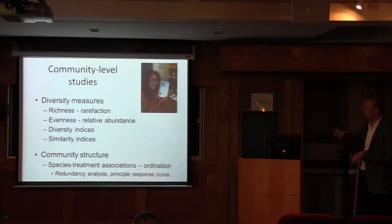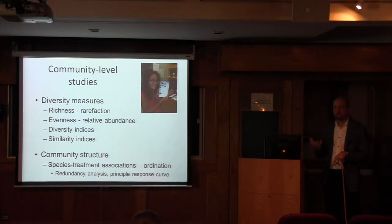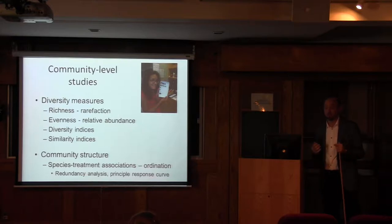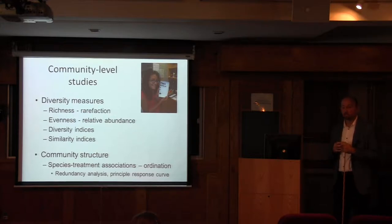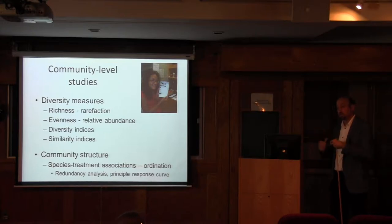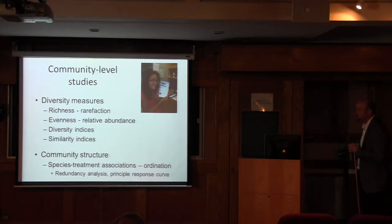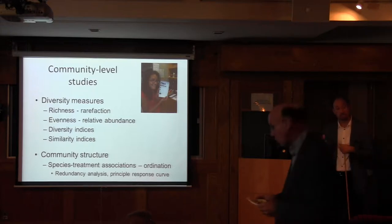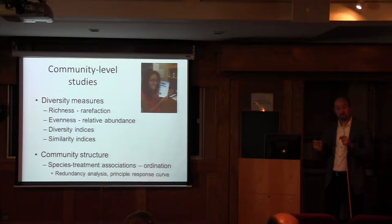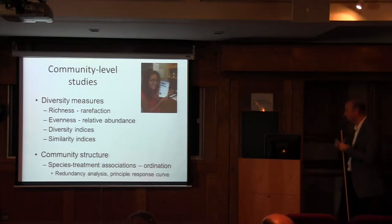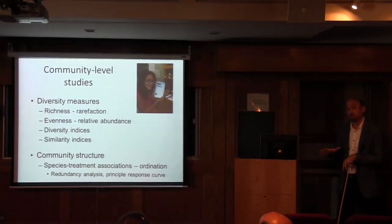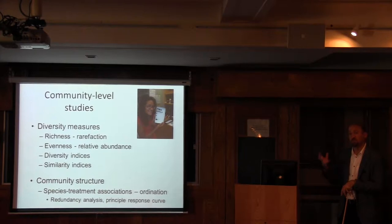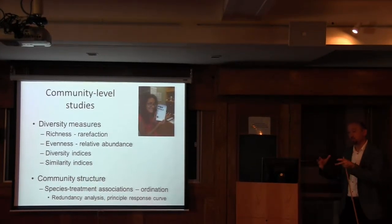The other toolbox I'll pull from is community structure, because with diversity measures you lose species-level resolution — you're reducing everything to a number and don't know how different species are responding. I'll present results from ordination techniques where we look at how species and treatments associate by identifying dominant gradients in the community. Primarily I'm using redundancy analysis, a form of constrained ordination, and also principal response curves, which add a time component — essentially a multivariate repeated measures approach showing how species respond to treatment factors at multiple points in time.